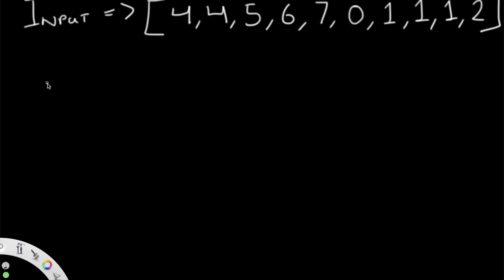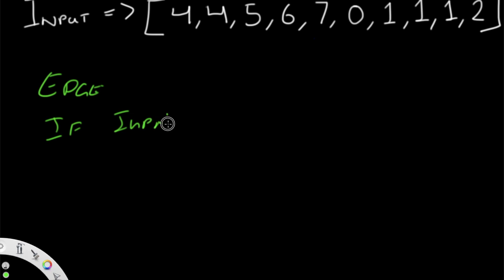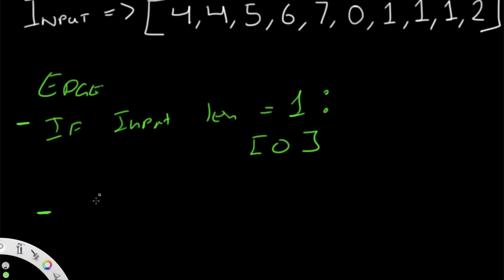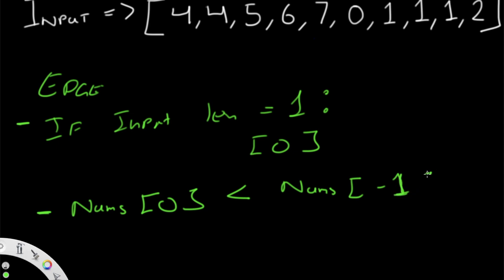Before we get into a while loop performing a binary search, we need to establish a few edge cases. If our input has a length of 1, we just return whatever is at the 0th index. The second case is if the input is already in ascending order — we check if nums[0] is less than nums[-1] (the last element), and if true, the array is already sorted, so we return nums[0].